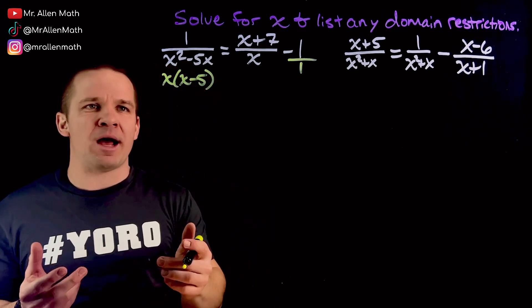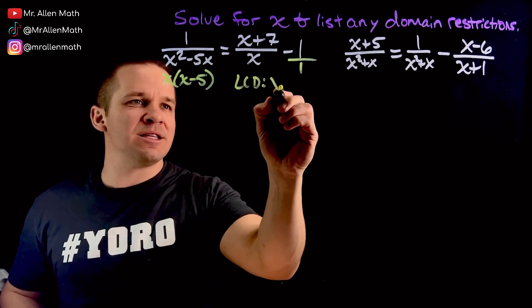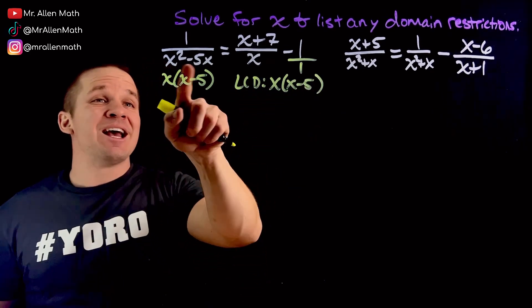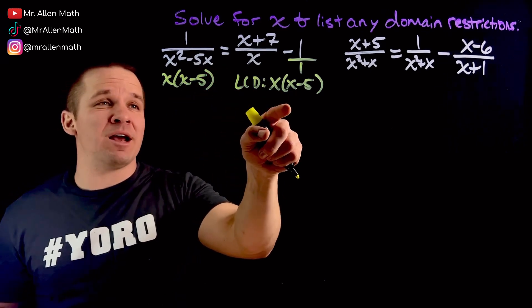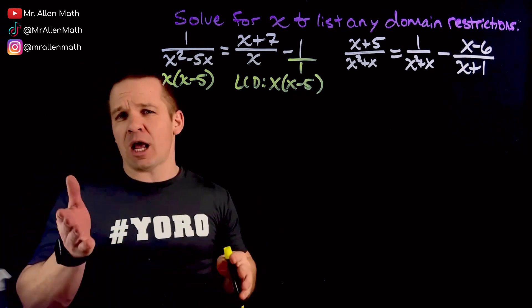All right, lovely. So what's my LCD? Well, my LCD is exactly that. So LCD is the x times x minus 5. It's got everything. From this one, it's got this guy right here in it, and it also has a 1, so it's there.